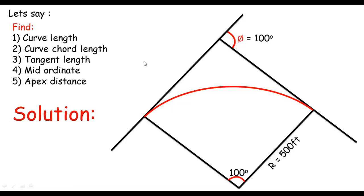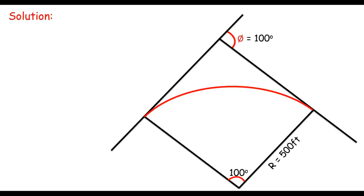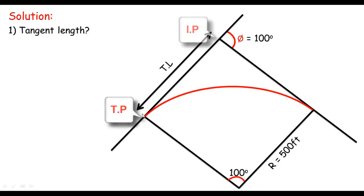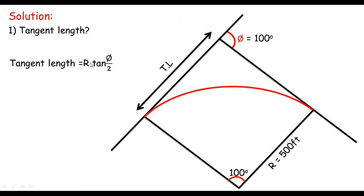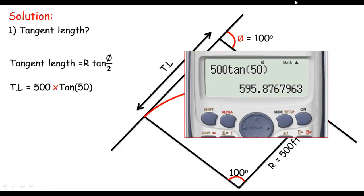I'll come straight into solutions. The first thing I want to calculate is the tangent length. The tangent length is the distance between the tangent point of the curve and the intersection point of the curve. The formula is T = R × tan(Δ/2). So tangent length = 500 × tan(50°), giving us 595.876 feet.